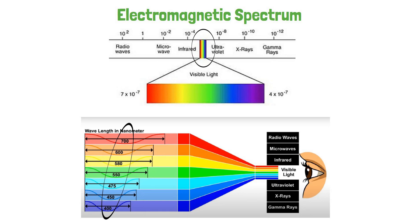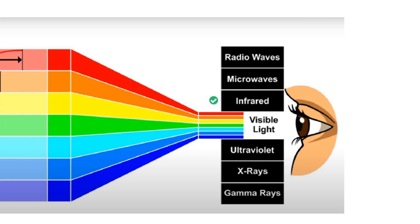Wavelengths beyond 700nm are infrared, microwave, and radio wave, while those below 400nm are ultraviolet, X-rays, and gamma rays, which are not visible to the naked eye.